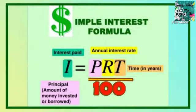Now we enter the most important part of the lesson — simple interest. The simple interest equation is I = PRT/100. You don't need to know how it is derived; just know the full form and how to apply the values. I is the interest amount, P is the principal (capital) amount, R is the annual interest rate, and T is the time period.